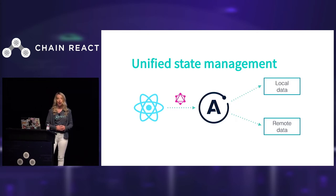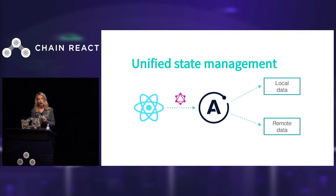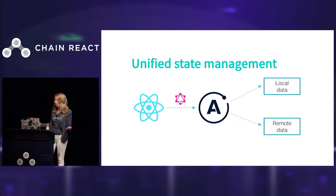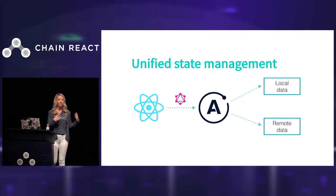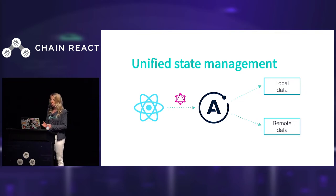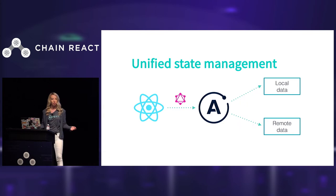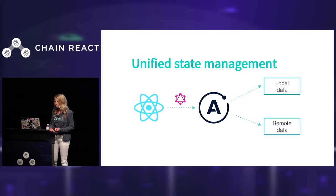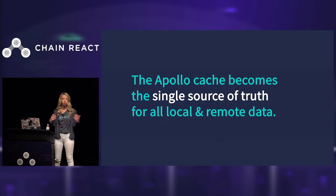Up until now we've mostly been talking about remote data from a GraphQL server, but most apps are probably made up of at least some local data — maybe you have network status of your device, information about the current user, or local state from a form. It turns out we can actually manage our local data the same way we manage our remote data, inside the Apollo cache, thanks to an extension called Apollo Link State. Our React component sends a query to Apollo Client, and using Apollo's extensible network stack called Apollo Link, we can intercept that request and instead of sending it to our GraphQL server, send it to our client cache. We have Apollo Links for just about everything — Firebase, REST endpoints, or any other data source.